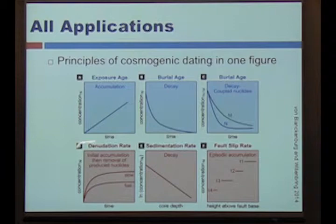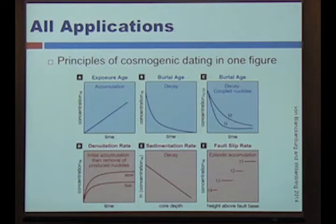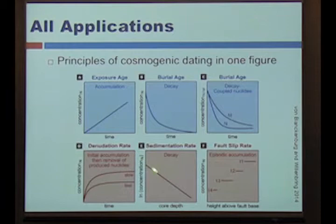You can also look at denudation rates. With fast erosion you build up to a steady concentration; with slow erosion, you build up more beryllium-10 because you're not constantly removing the surface material. We can also think about sedimentation rate—where the natural log of concentration should increase with core depth—and fault slip rates, where we get periods of episodic accumulation, with low and high height above the fault base.